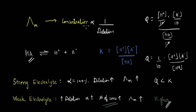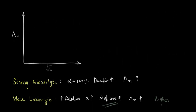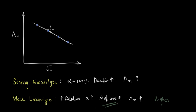Now let's see how this variation looks graphically. We want to plot the variation of molar conductivity with concentration for both a strong electrolyte and a weak electrolyte. On the y-axis we have molar conductivity lambda m, and on the x-axis we have the square root of concentration, √c. We plot against √c rather than c directly because it is easier to fit the experimental data points into a straight line. For a strong electrolyte, if we calculate molar conductivity at different concentrations and plot the data, we see that the points fall on a straight line.